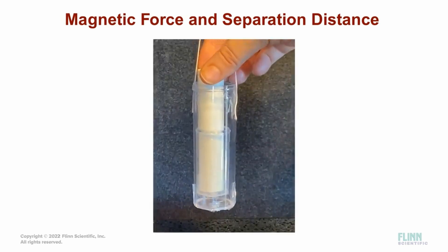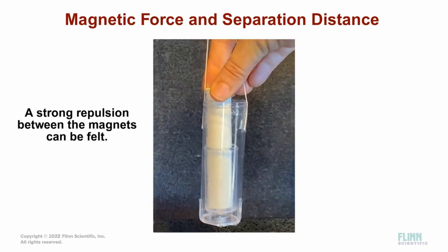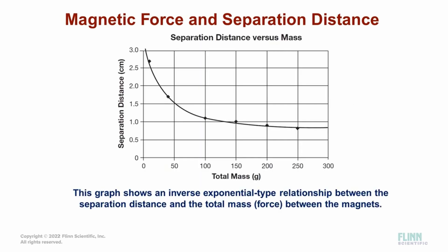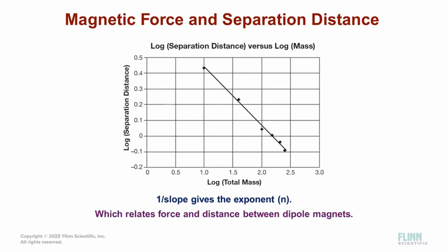When the PVC is pushed down, the repulsion between the magnets can be felt. The more force applied, the smaller the separation distance, but the stronger the repulsion. If we were to plot just the separation distance versus force, the graph would show an exponential curve. By plotting the log of the separation distance versus the log of the force, the slope of the line can be calculated. The inverse of the magnitude of the slope gives the exponent, which shows the relationship between force and distance between two dipole magnets.